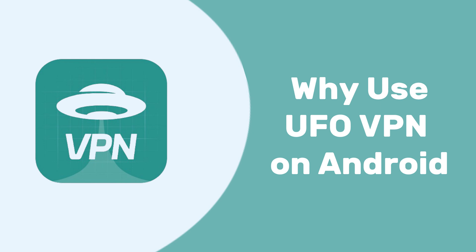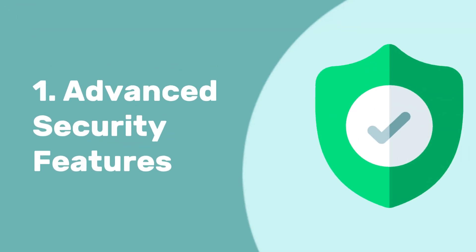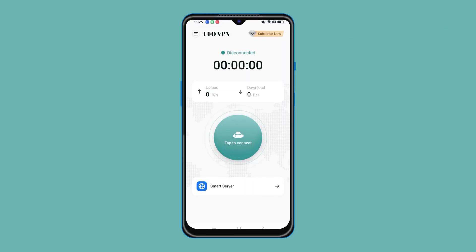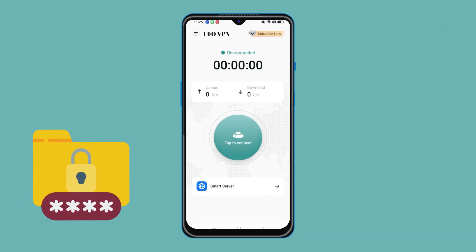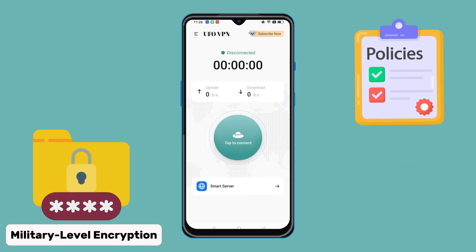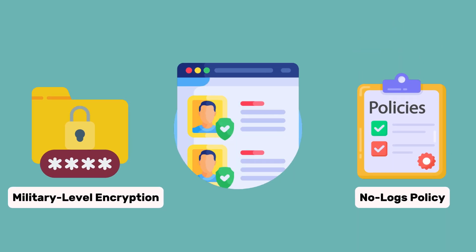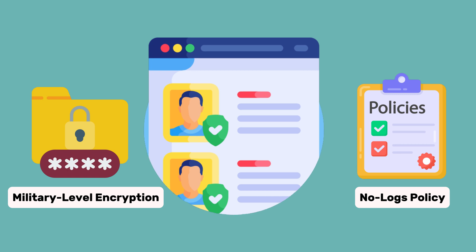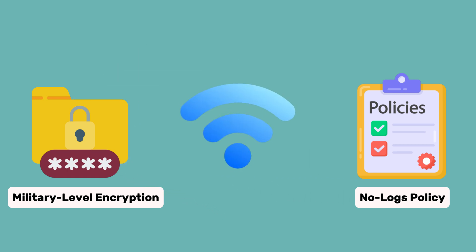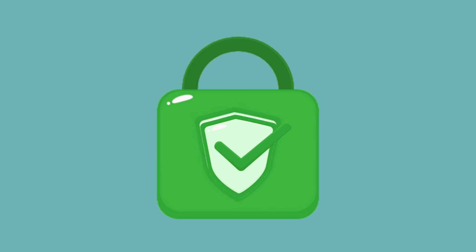Why use UFO VPN on your Android devices? Firstly, advanced security features. UFO VPN uses military-level encryption and a stringent no-logs policy to protect your info online, ensuring that your sensitive information remains private — giving you a sense of security on public Wi-Fi or when accessing confidential documents.